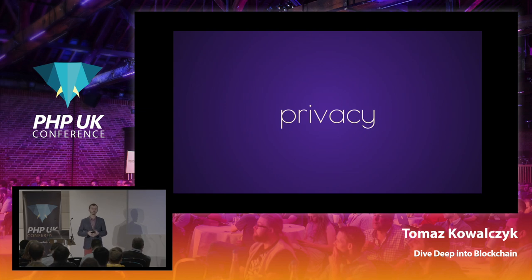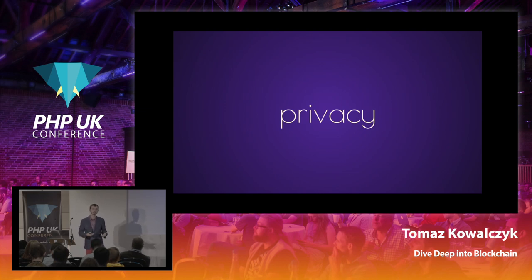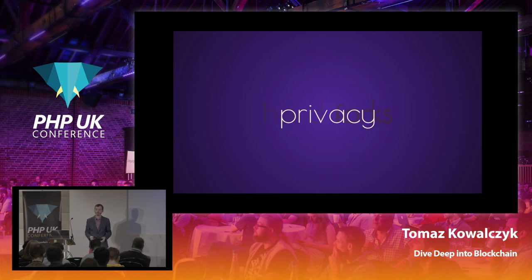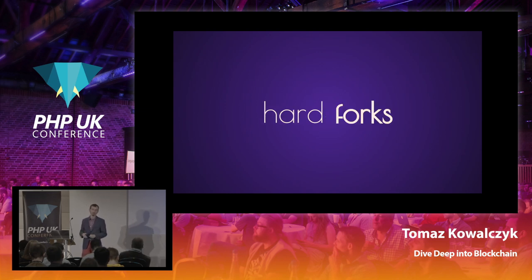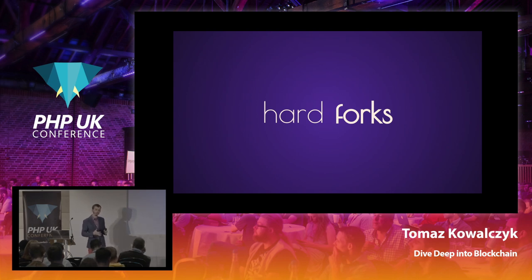Privacy is another big concern. If your data is not encrypted, how would you ensure correct people have access only to correct information? For example, if you store your company's invoices, how do you prevent unauthorized parties from gaining access? And since you don't control the network and every node is equal, what happens when someone changes the rules, alters the code, or compiles it with a different version? You may stumble upon the problem called a hard fork.